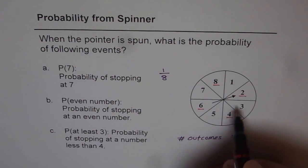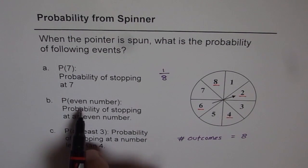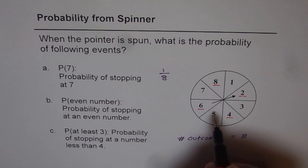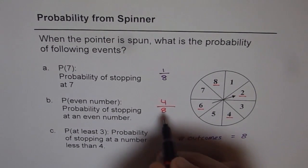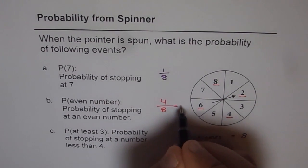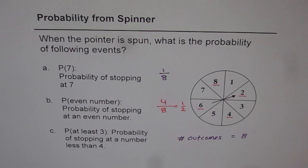So if it stops at either one of these 4, we get an even number. So favorable outcomes are 4 for us, 4 out of 8. So the probability is 4 out of 8, which could be written as half or 50 percent.